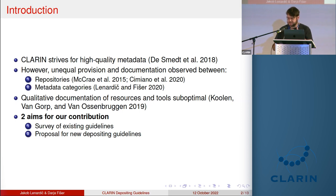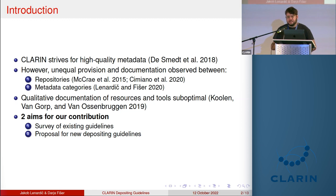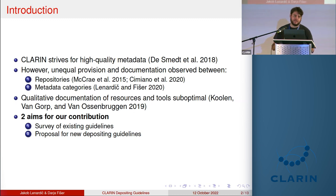Furthermore, qualitative documentation of resources is also often suboptimal in the sense that it's often unclear what a deposited corpus contains that's relevant to the specific needs of the research domain. Against these observations, we have conducted a review of the existing depositing guidelines of the CLARIN repositories. We looked at how they instruct depositors to document basic metadata such as corpus size and annotation, and on the basis of the survey we now propose a new set of recommendations.